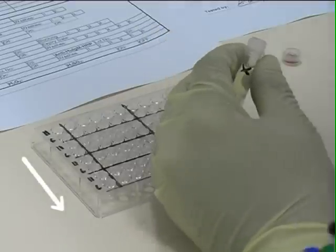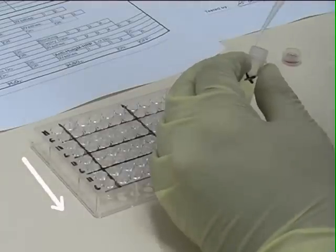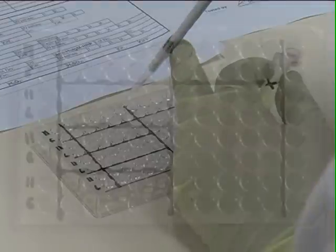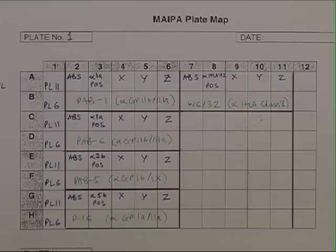And the controls and patient sera, or plasma, are added down the plate like this. We have a reagent blank in the first column, then a negative control, followed by various positive controls depending on the glycoprotein, and then the patient samples. In this case, we have called them samples X, Y and Z.